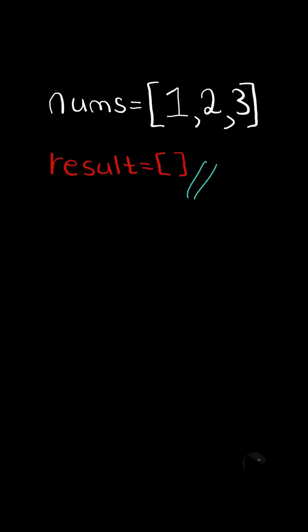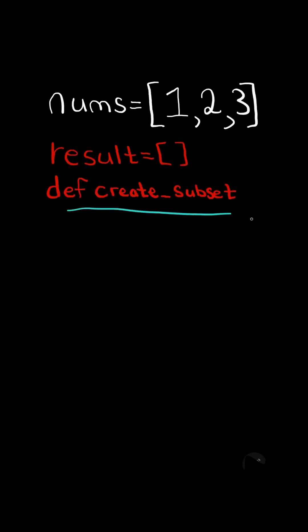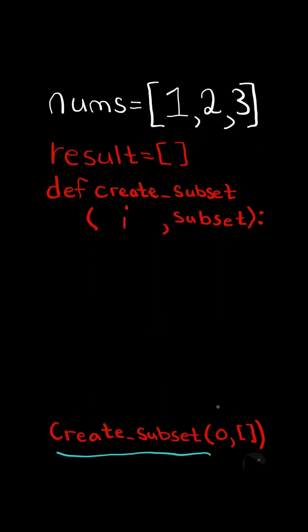First, we define an empty result list. We then define the recursive function and takes in an index and a subset. And initially, we call the function with index 0 and an empty list.